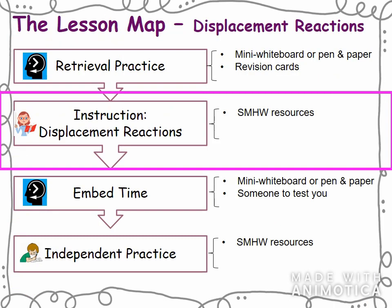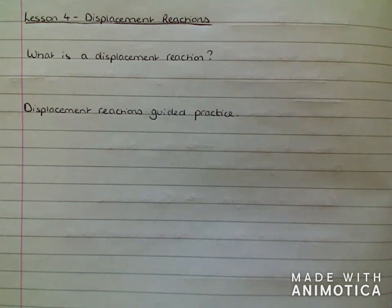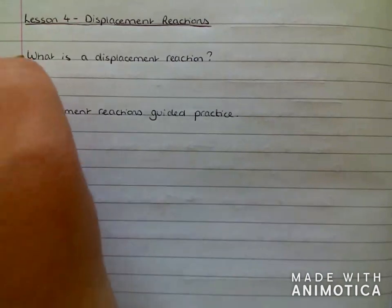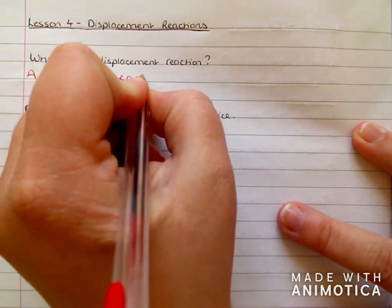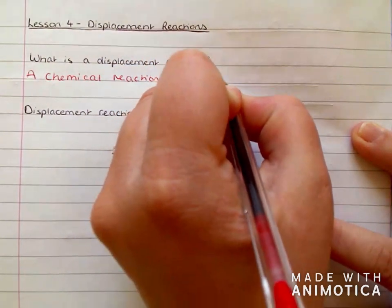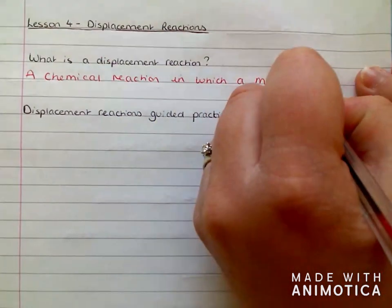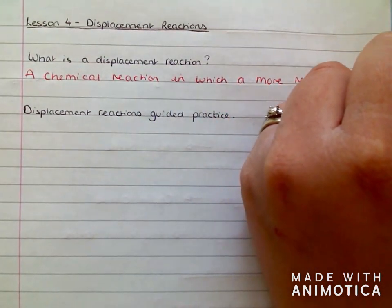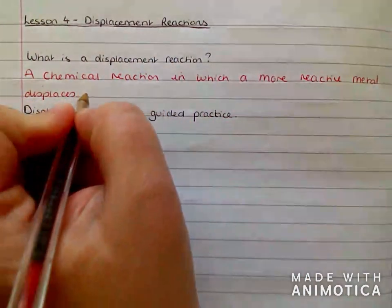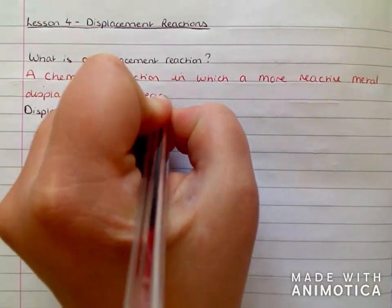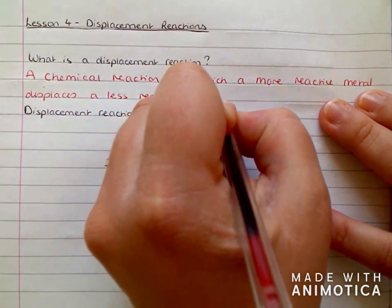We are now going to move on to focus on displacement reactions. To do this, you will need to access the resources on Show My Homework. If you haven't done so already, please pause the video and get yourself organised. The first question for us to cover today is: what is a displacement reaction? It is a chemical reaction in which a more reactive metal displaces a less reactive metal in a compound.